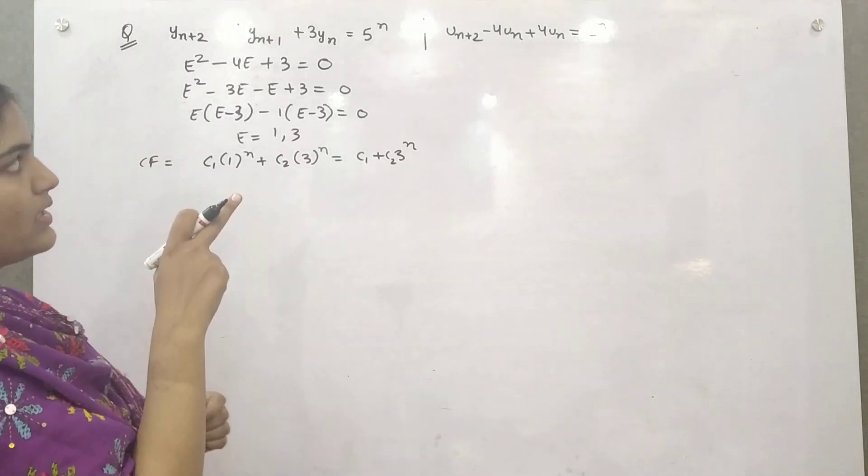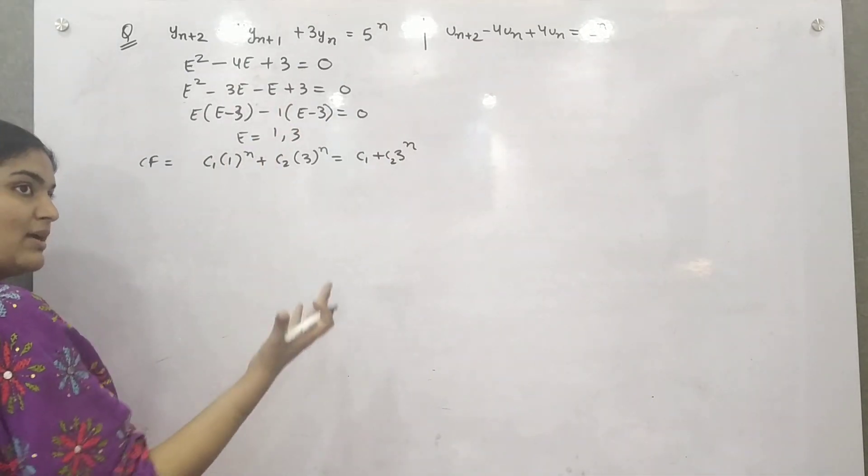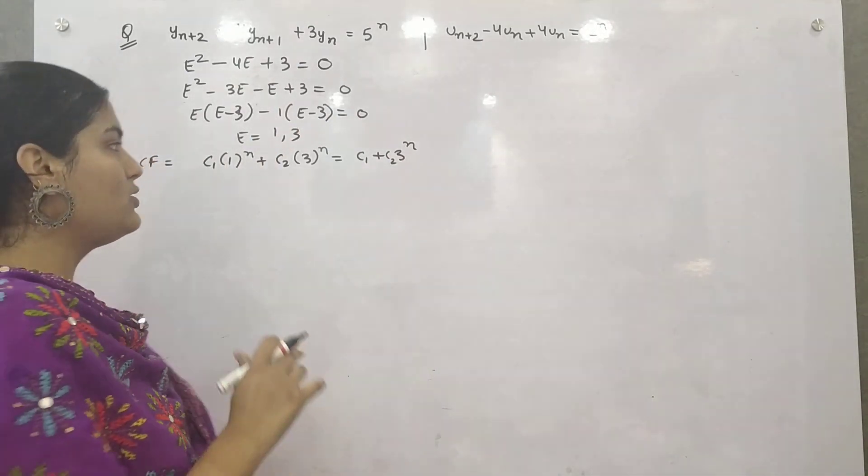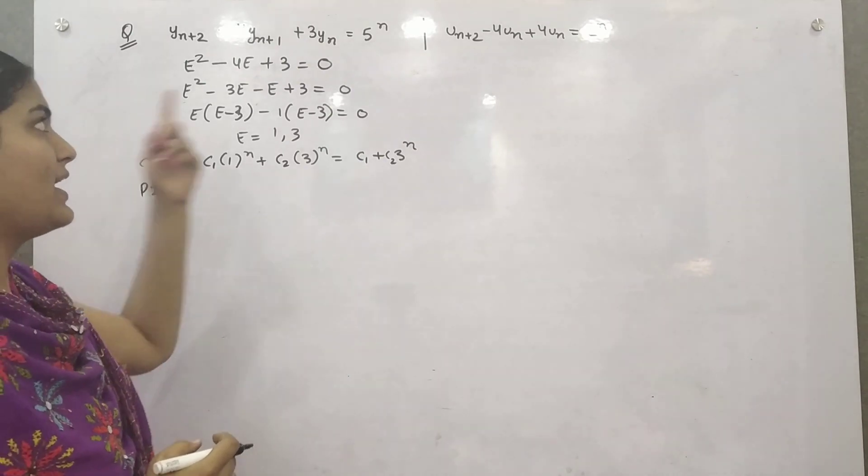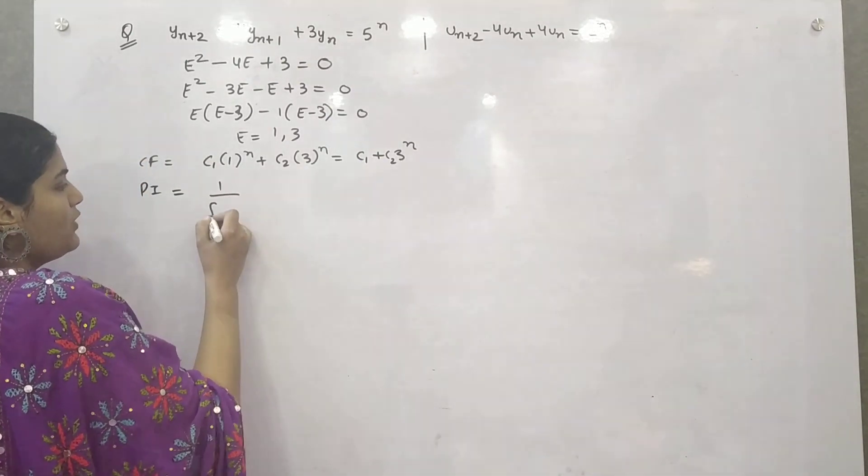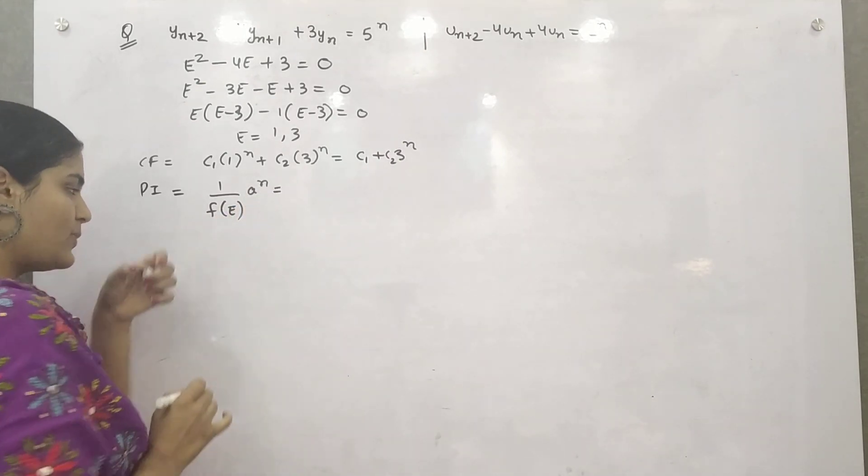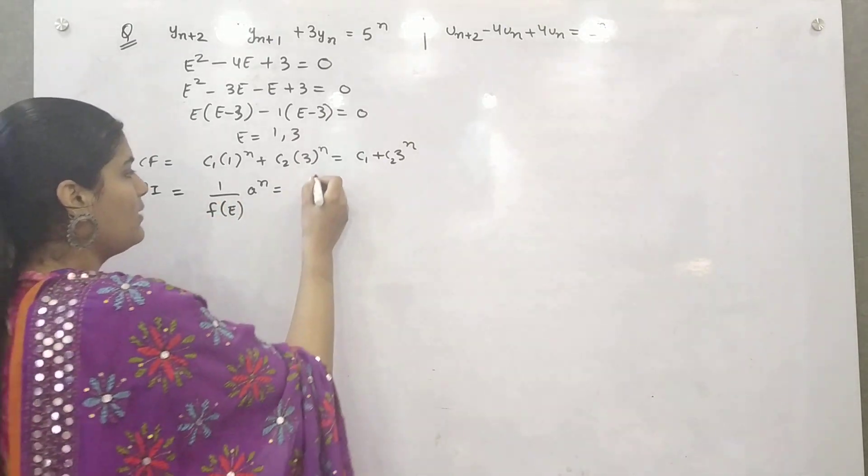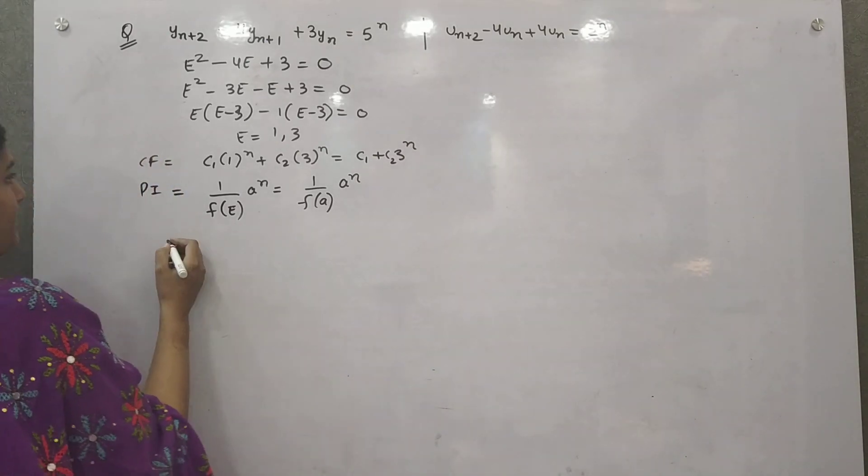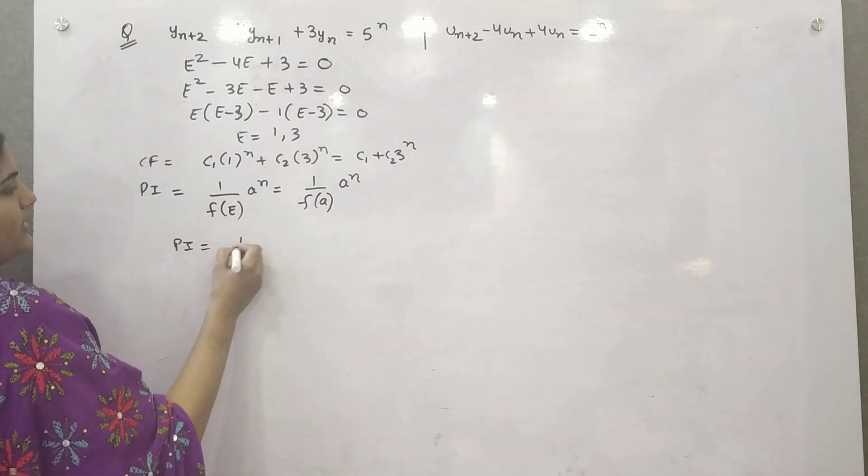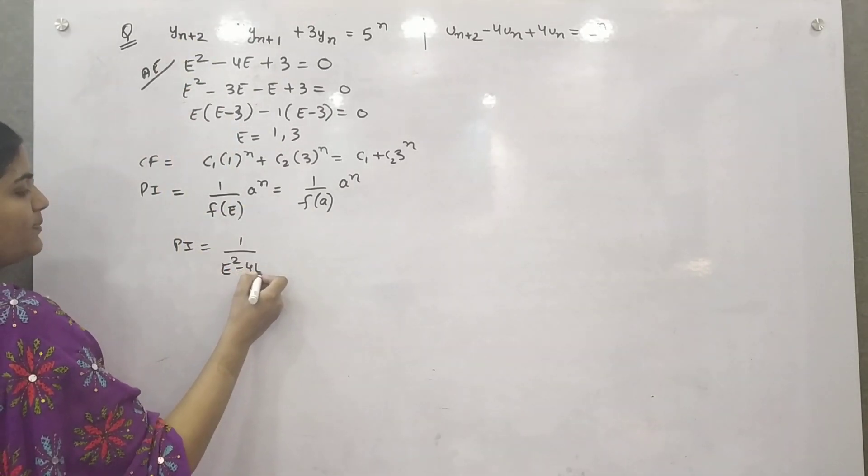If it would be zero, then this will be your complete solution. But because it equals something which is in the form of a raised to power n, you need to find out particular integrals. So what is the formula for particular integral of the case a raised to power n? If you have an equation in this form and it is a raised to power n, you simply put a in place of e. This will be your particular integral.